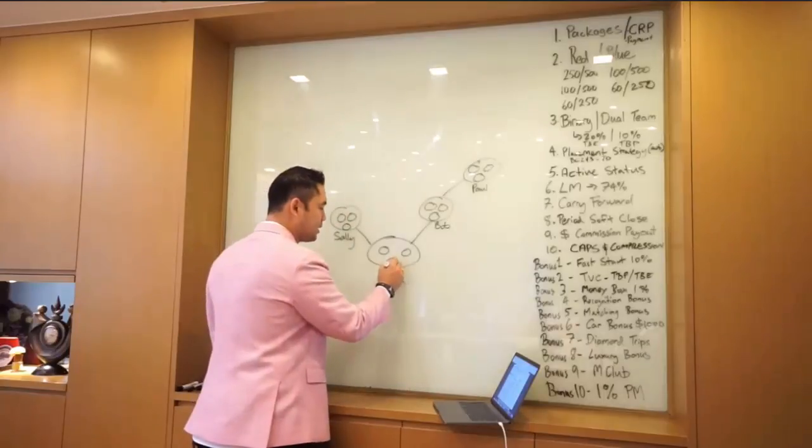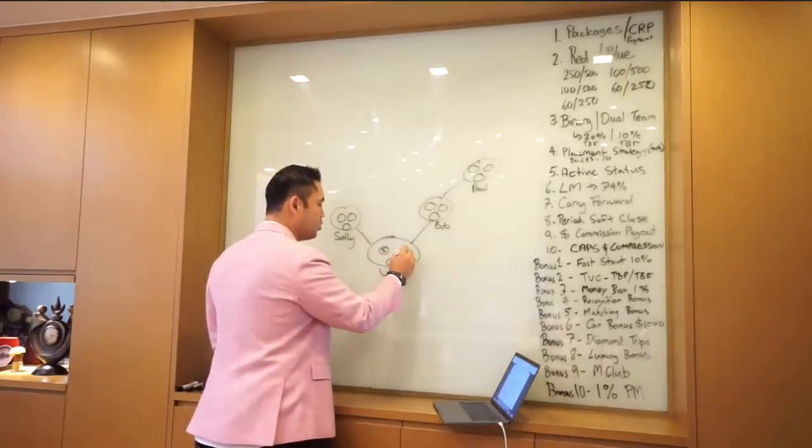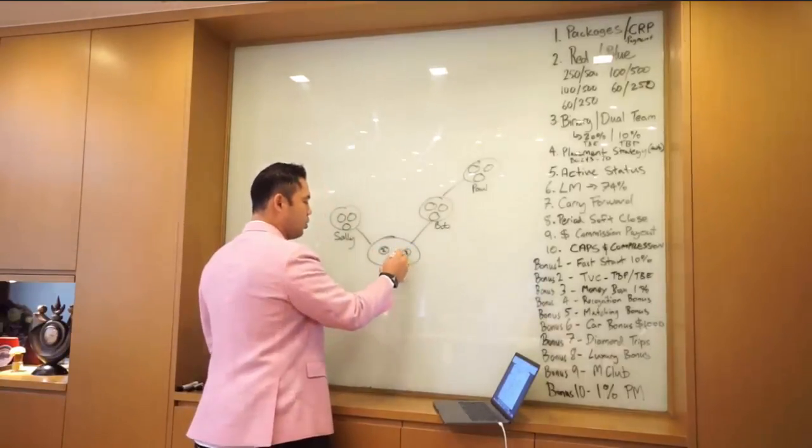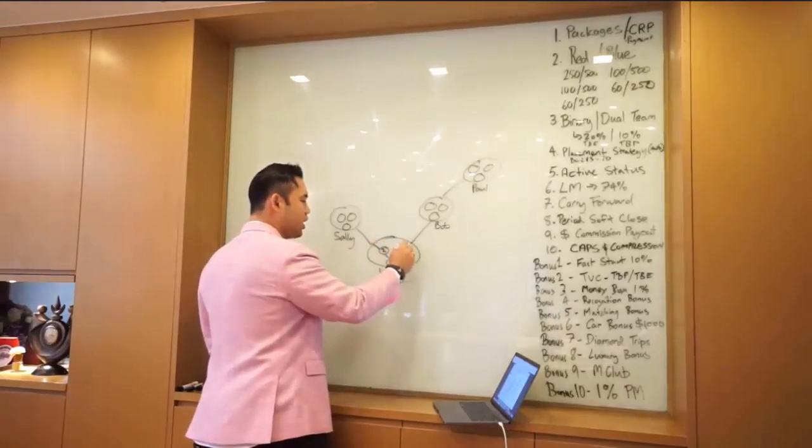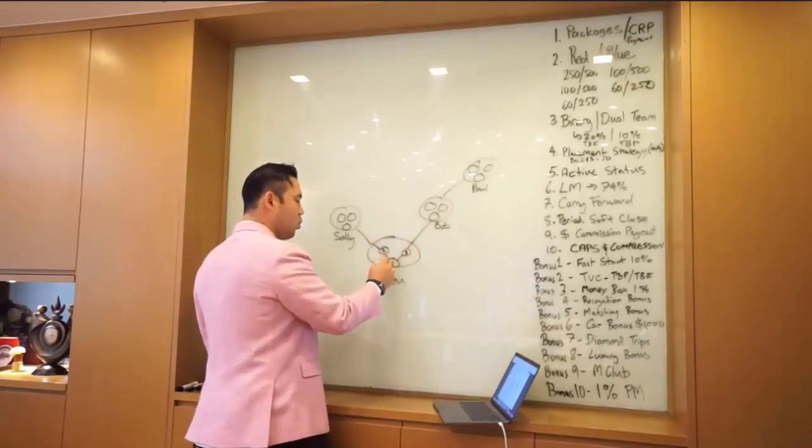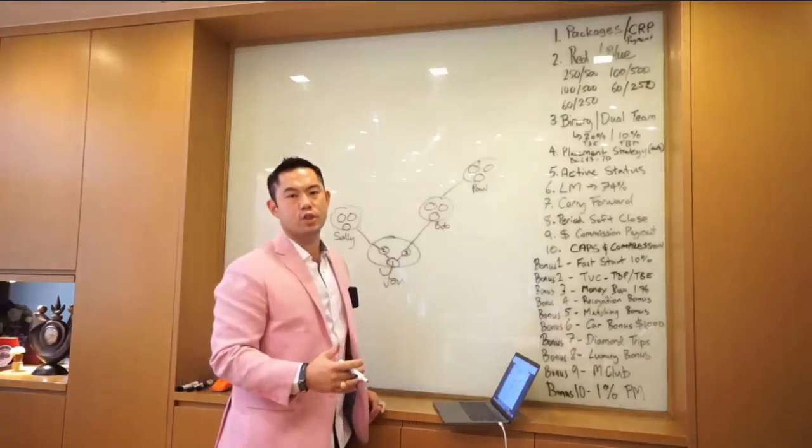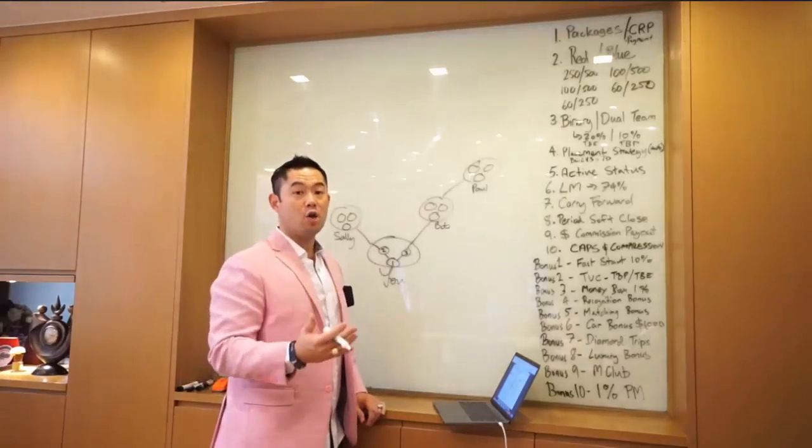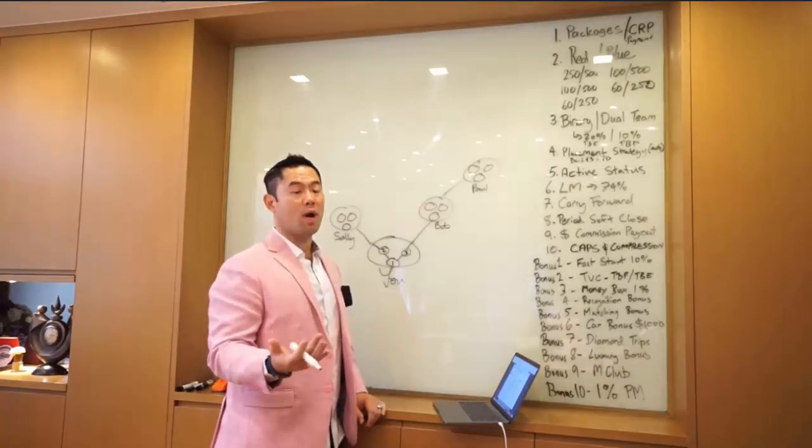If you look here, this is my business center one, this is my business center two, business center three. So if you look here, if you connect the dots, my business center one have a left leg and a right leg. Remember to earn commissions, you need to have volume on the left and volume on the right.